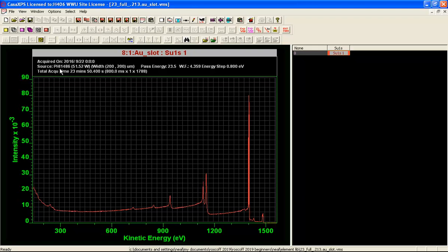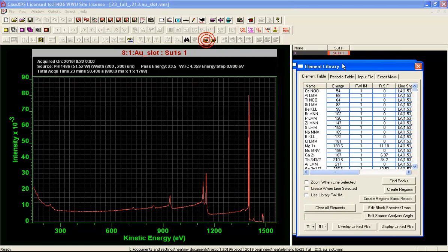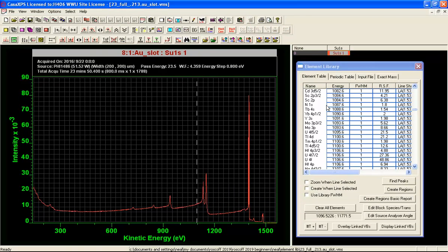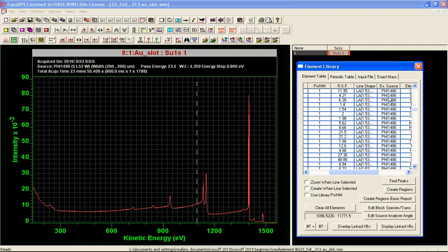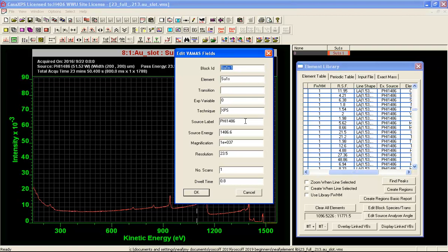The source label is then PHI 1486. When the element library is selected, the lines that are displayed in the element library correspond to the lines that match the source label PHI 1486. These values here match the value for the source label, which can also be seen in the block info. Here is the source label, the energy, and various other parameters that have been brought in, such as the resolution from the original SPE file.